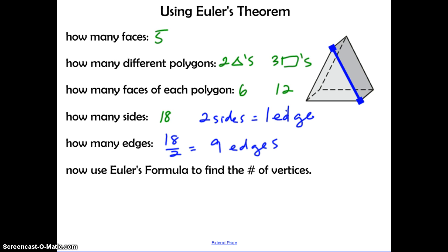Now we want to use Euler's formula to find the number of vertices. So we said we have five faces, nine edges, so V is equal to six.